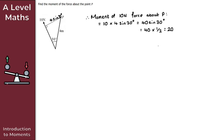Don't forget the units — we're working in meters so it's newton meters. We also need to state the direction of rotation. Imagine holding point P with your finger; when the 10 newton force is applied upwards, the object rotates clockwise. So the answer is 20 newton meters clockwise.